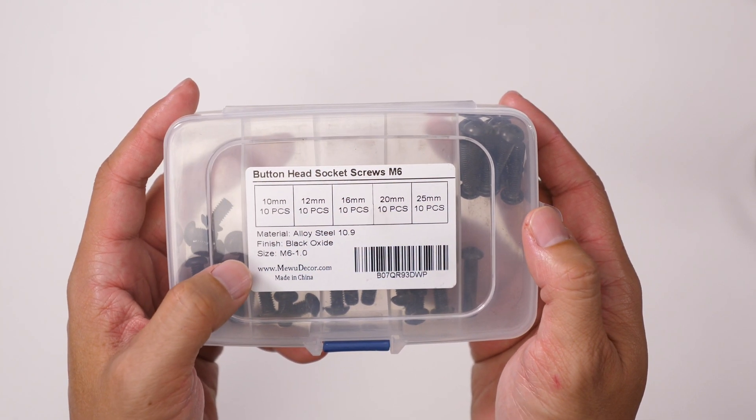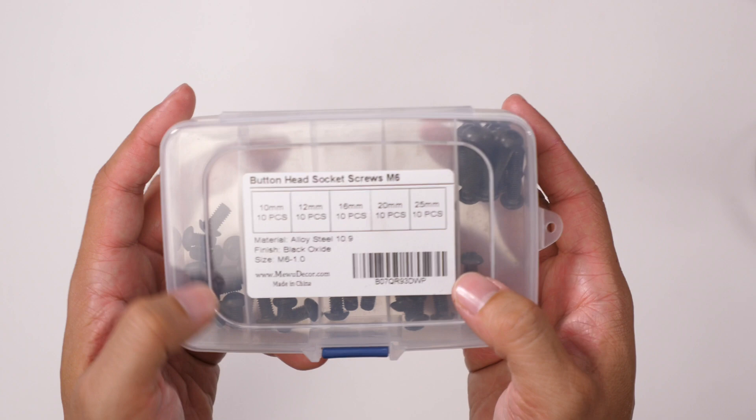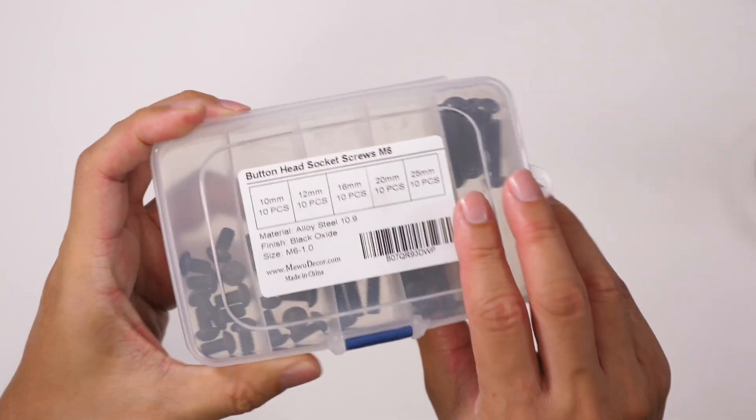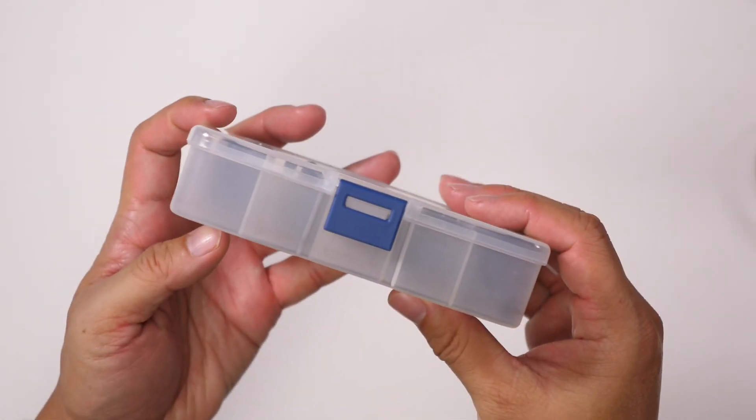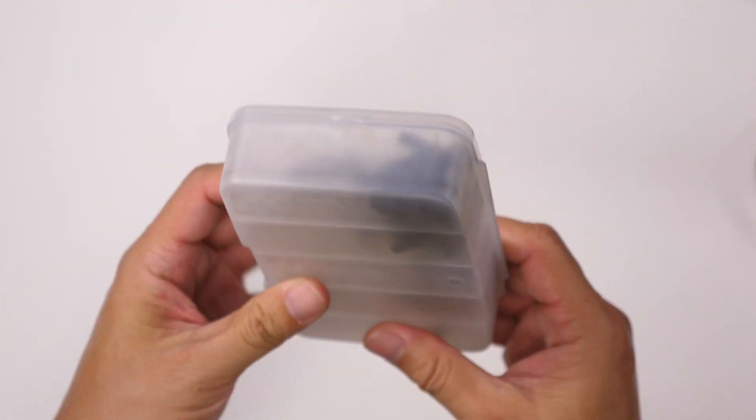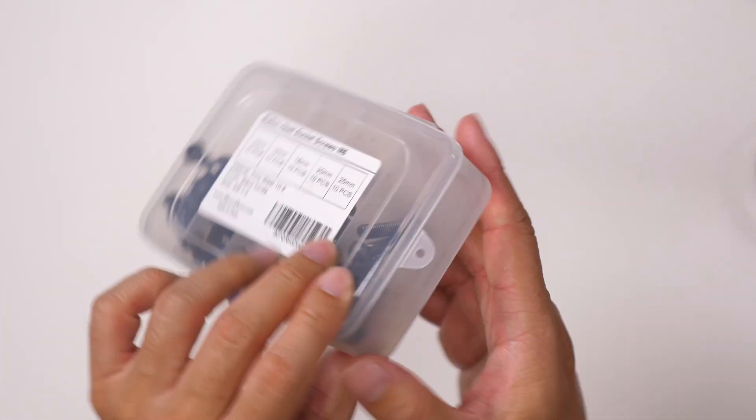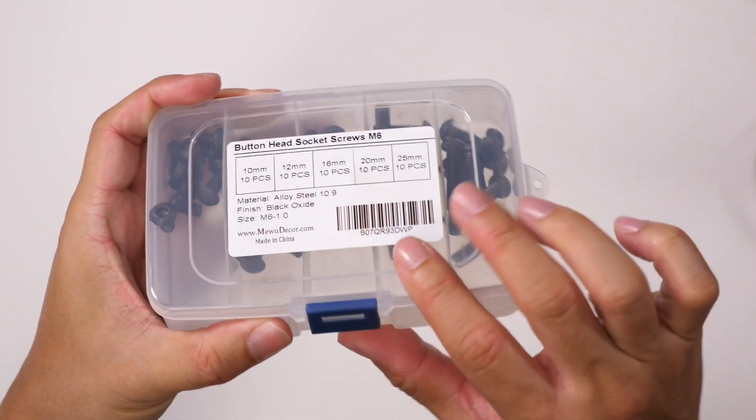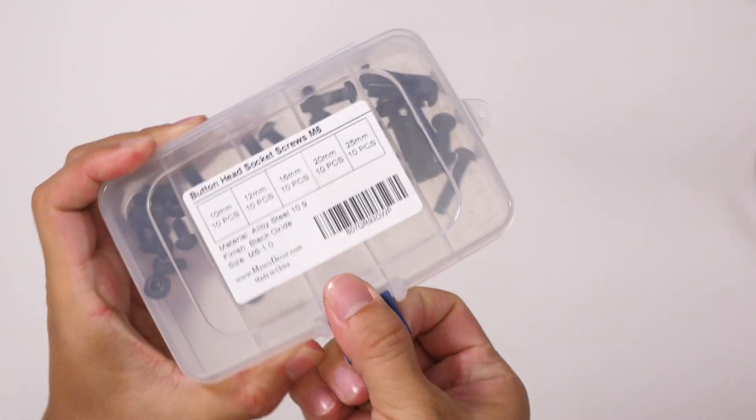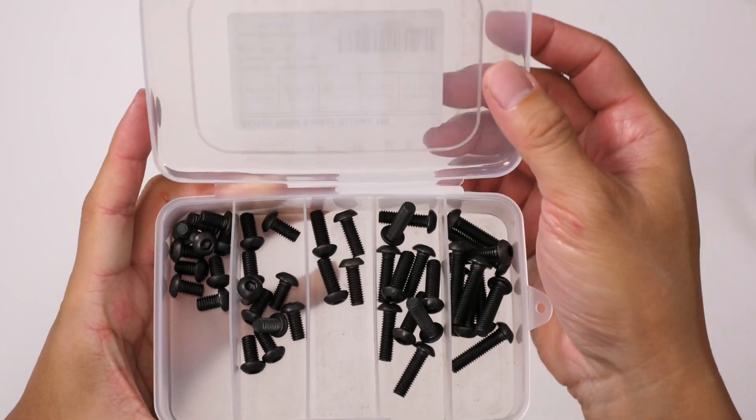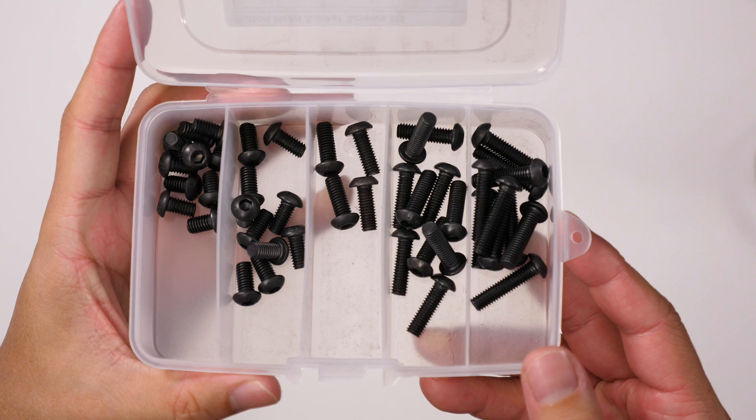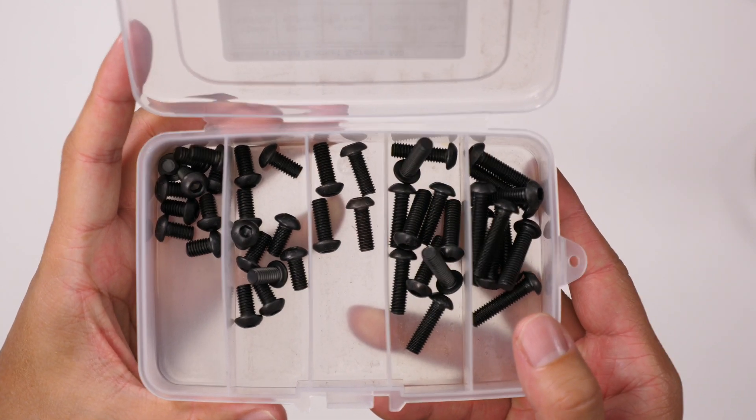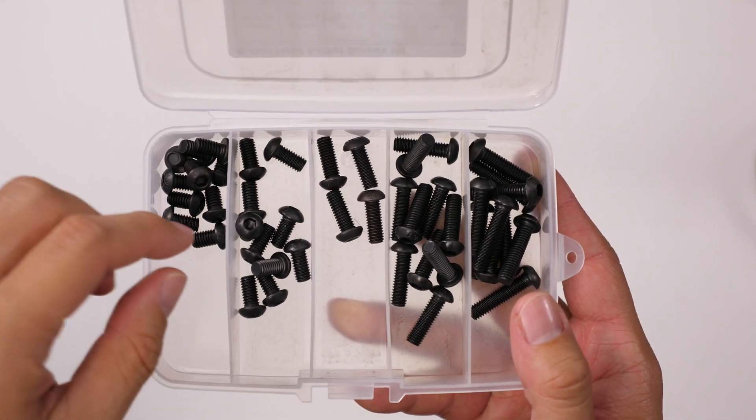Then again, it's an M6 size, made in China, comes in this case here, and it's got a locking patch there. Just open that up and you can see what a button head socket screw looks like.